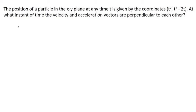The position of a particle in the x-y plane at any time t is given by the coordinates (t², t³ - 2t). At what instant of time are the velocity and acceleration vectors perpendicular to each other? What is given to us is the x and y coordinates of the particle. The x-coordinate of the particle is t² and the y-coordinate of the particle is t³ - 2t.